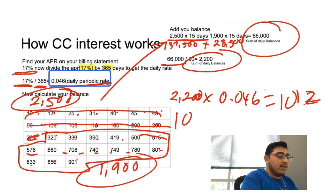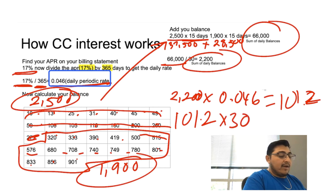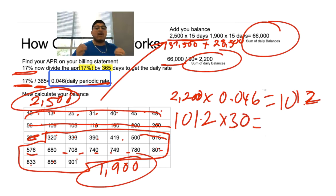So now we get 101.2 and we're going to multiply that by 30. This is going to give us our actual how much interest we're going to pay for that month. When you multiply 101 by 30, you're going to get a four digit number - you're going to get 3,036.